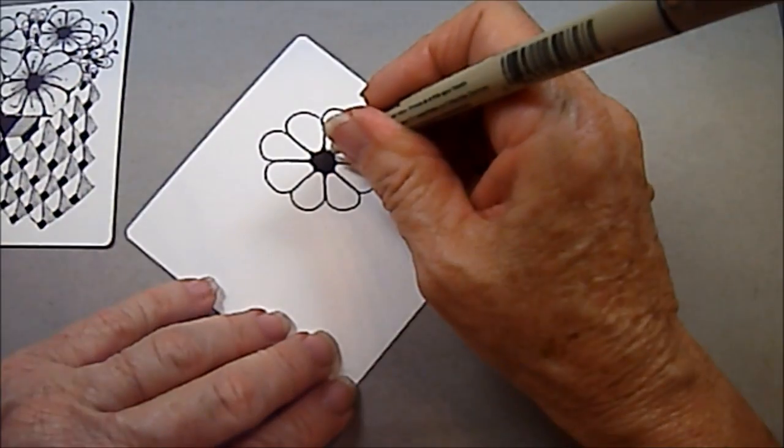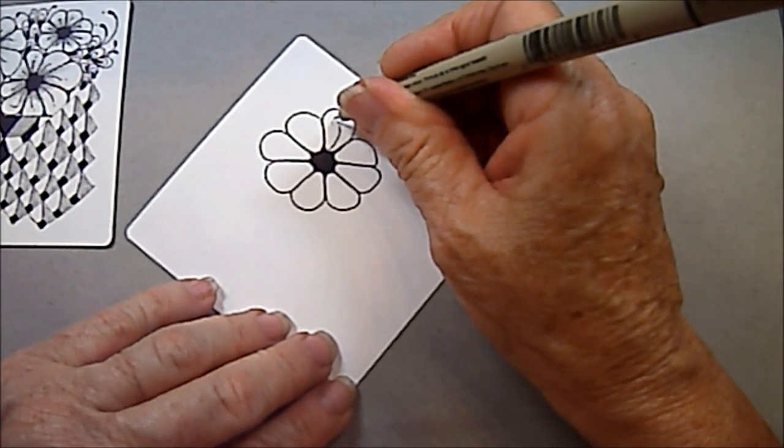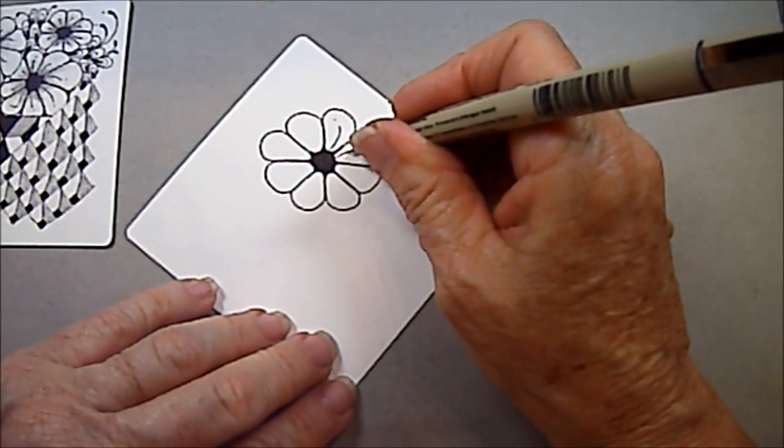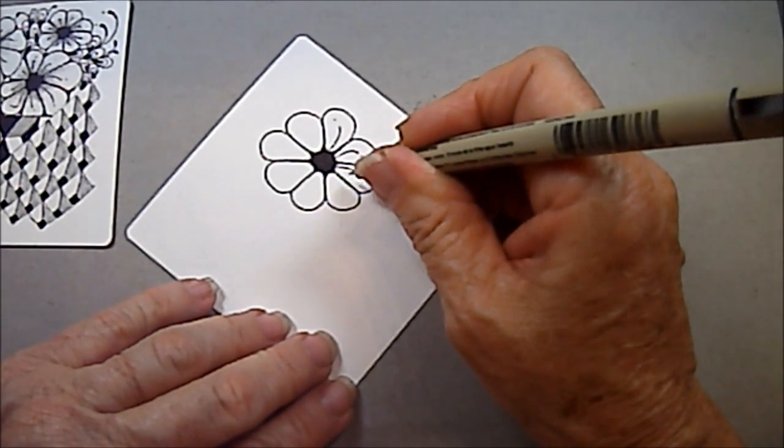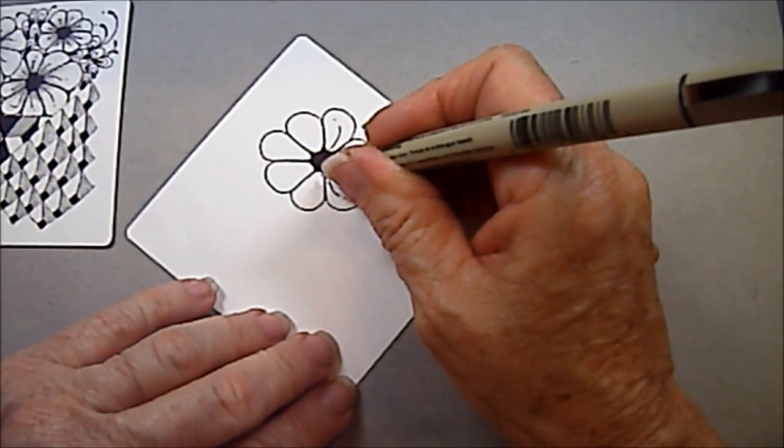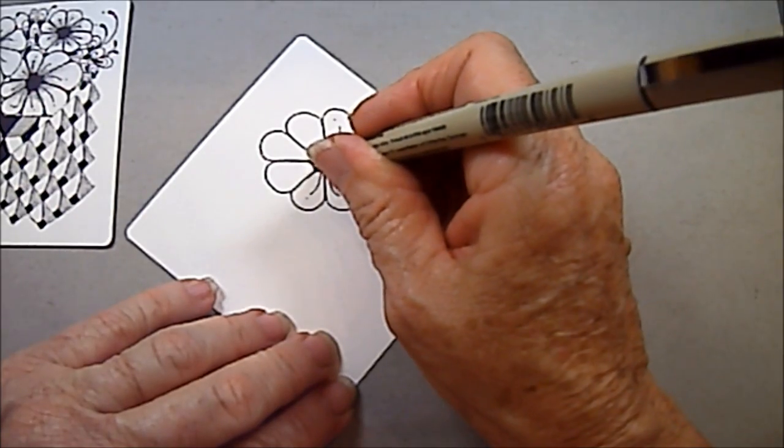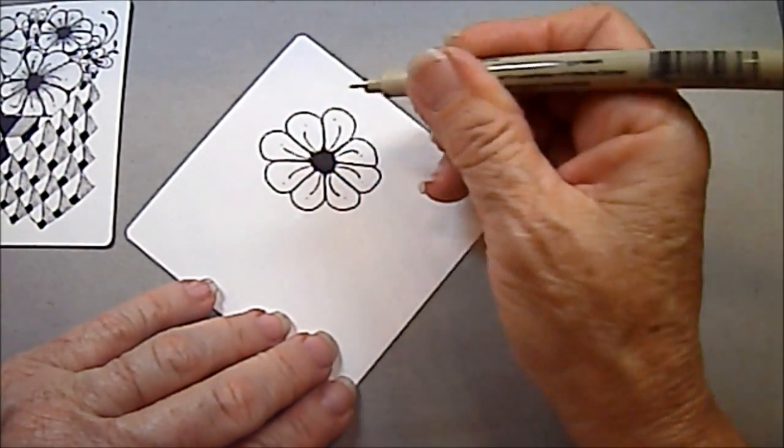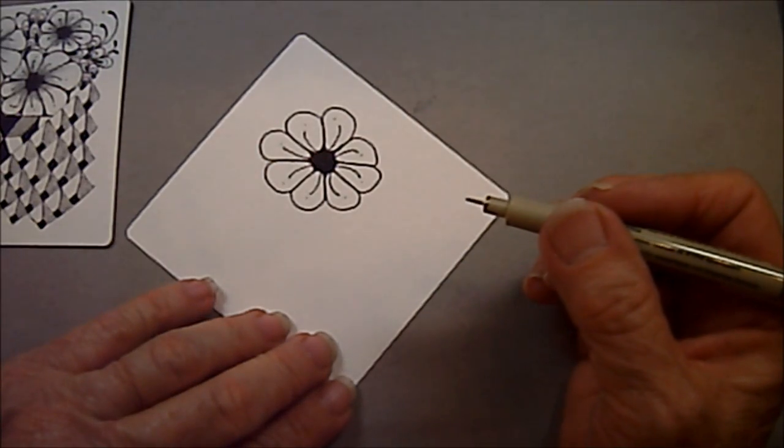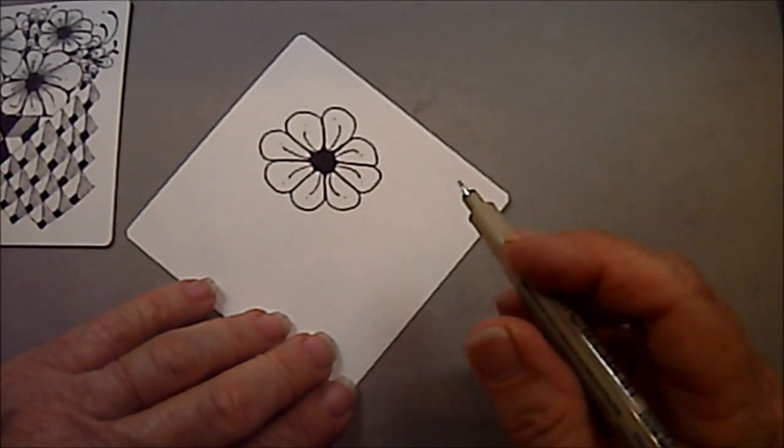And then I'm going to take a stroke here, and I'm going to do a little round. It's going to be a little curved. Making that curve, going whichever way you want, will help those little petals in Joyful have a rounded look. And there we have Joyful.